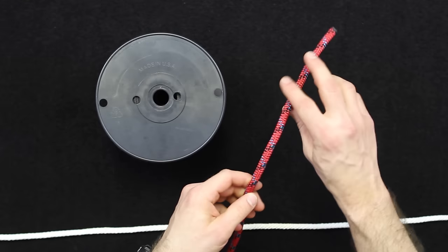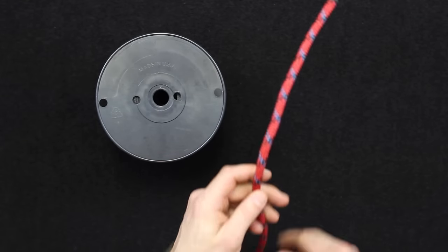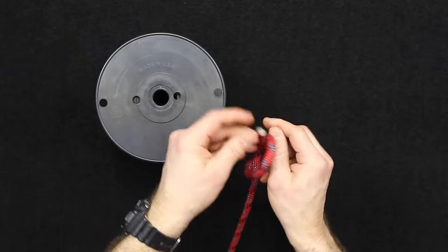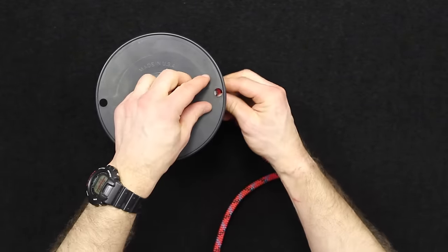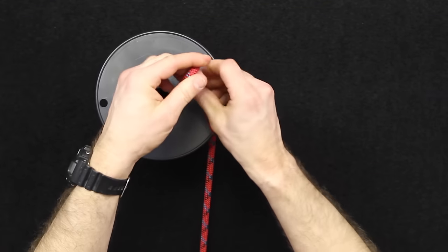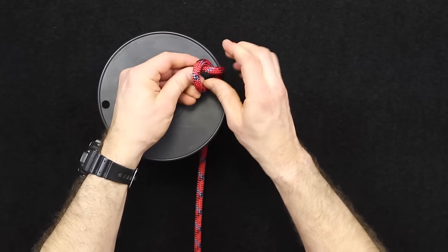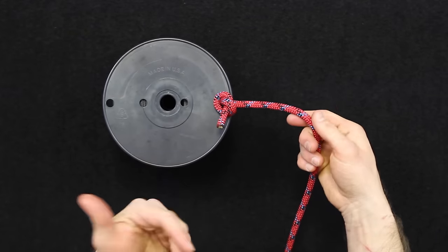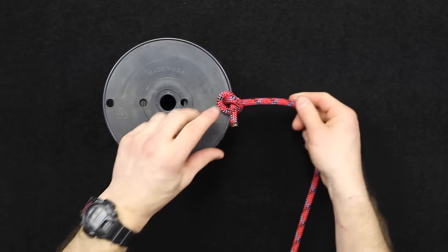First off, I want to start with the generic overhand knot. An overhand knot, everyone's pretty familiar with—that's probably the most generic form of a stopper knot. If I were to put this through here and tie a simple overhand knot, it would prevent that from pulling through, thereby doing its job as a stopper knot.